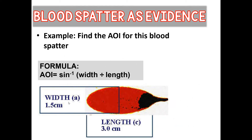Let's practice one together. If a blood stain has a length of 3 centimeters and a width of 1.5 centimeters, you plug 1.5 divided by 3 into the formula, get that answer, and then take the inverse sine of it — which gives you about 30 degrees. This tells you that when the blood hit the surface, it came in at a 30-degree angle.